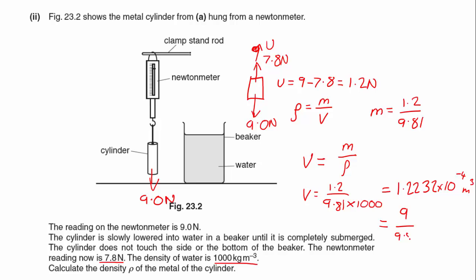Actually, we can see the 9.81s in the calculations would have cancelled out, but I've gone with them so I'll carry on. Multiplied by the volume, which I've got in my calculator as 1.2232 × 10⁻⁴, so 9 divided by that gives me an answer of 7,500 kg/m³.